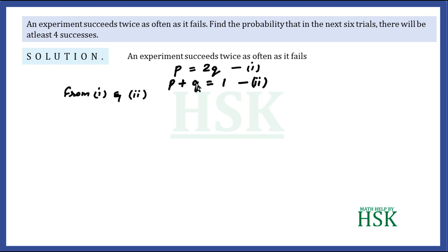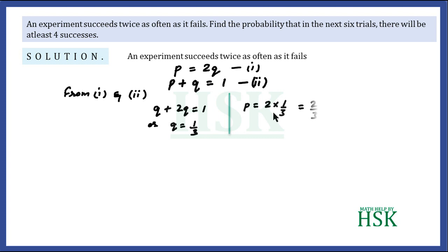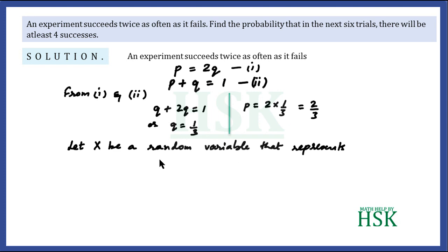From these two equations we can write q + 2q = 1, which gives q = 1/3, and p = 2 × (1/3) = 2/3. So we know the values: q = 1/3 and p = 2/3. Now let X be a random variable that represents the number of successes in the six trials.